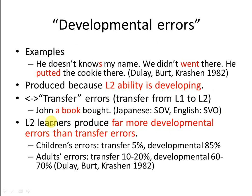A Japanese learner of English may say 'John a book bought' — correct in Japanese word order but not in English. This can be considered a transfer error, but actually this kind of error is very rare. We don't often hear transfer errors like this, but we do often hear developmental errors like the ones mentioned earlier.